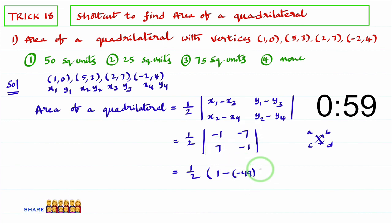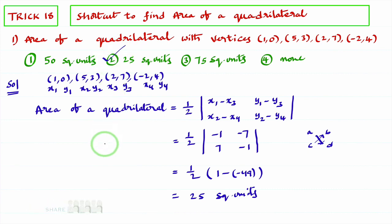that is minus 49. So that equal to minus of minus is a plus. 1 plus 49 is 50. 50 divided by 2 is 25. 25 square units. So which option is the right option? Second option is the right option. Now we will do one more example to understand this trick more clearly.